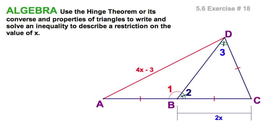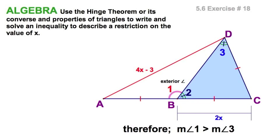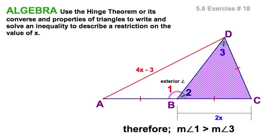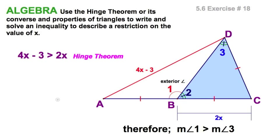Angle one is opposite the red expression. Angle three is opposite this blue expression. Each of these angles is adjacent to a congruent segment, and by the reflexive property, another congruent segment. So these two angles would be ruled by the hinge theorem. The most obvious thing right here is that angle one is an exterior angle to this triangle. That means the measure of angle one is greater than either of its remote interior angles — that would be angle three. We set up an inequality to show that, meaning the red side is greater than the blue expression representing the blue side.